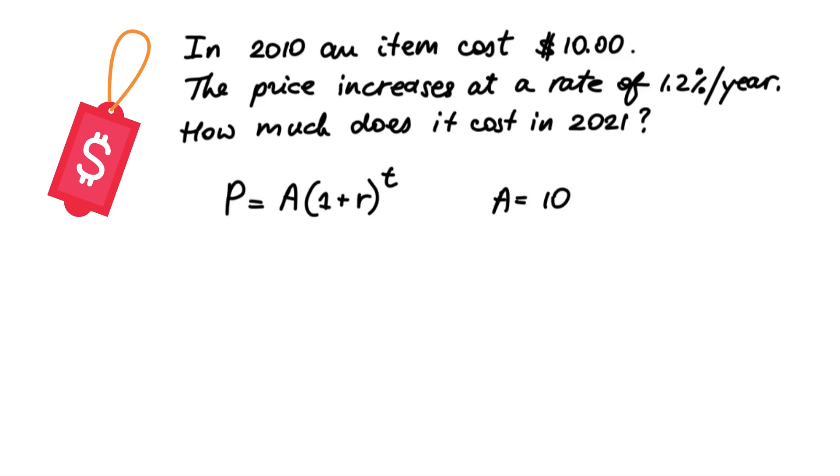We also know the rate at which the price increases every year. And r will be 1.2% divided by 100%. Whenever we include the rate in the equation, it has to be in decimals, 0.012.